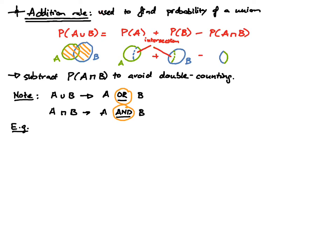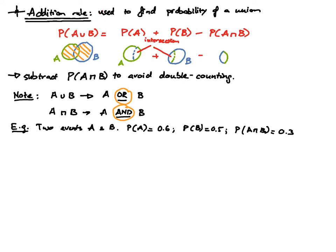Now let's look at an example. Suppose we have two events A and B where the probability of A is 0.6, the probability of B is 0.5, and the probability of the intersection of A and B is 0.3. We want to find the probability of A union B.